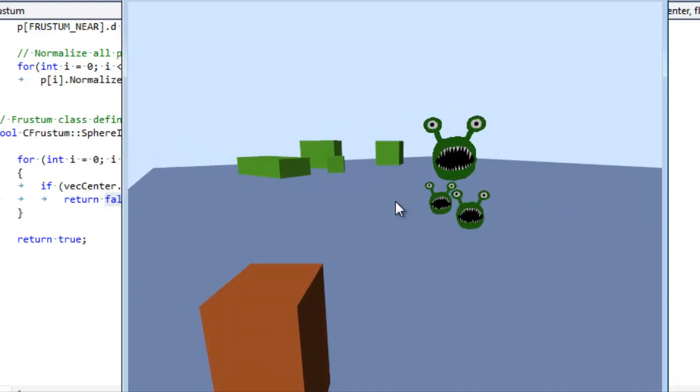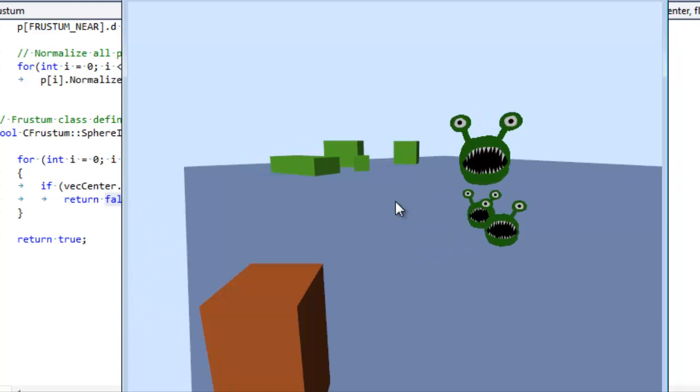So great. That should do it for frustum culling. Next time we're going to sort our scene so that we can use a painter's algorithm and only render things in the back first. I'll explain all that next time. See you then.